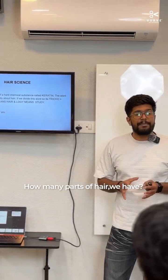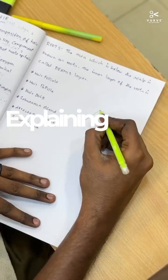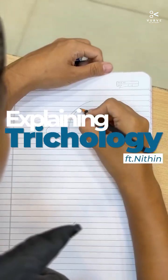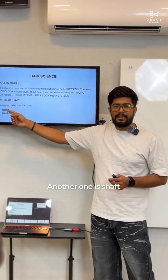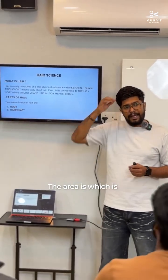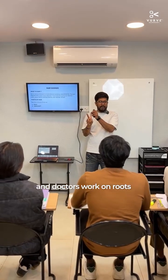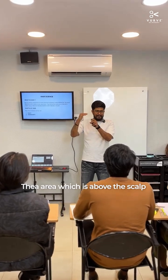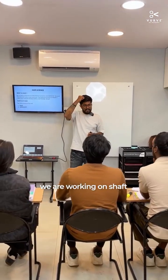If someone asks how many parts of hair we have, there are two parts: one is roots and another one is shaft. The roots are the area which is below the scalp, and doctors work on roots. The area which is above the scalp is known as the shaft, and we are working on the shaft.